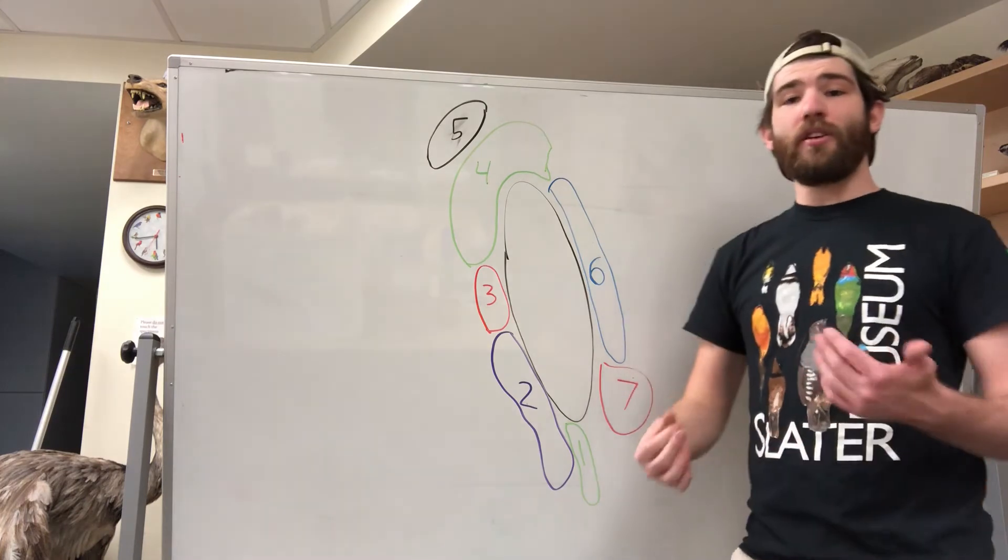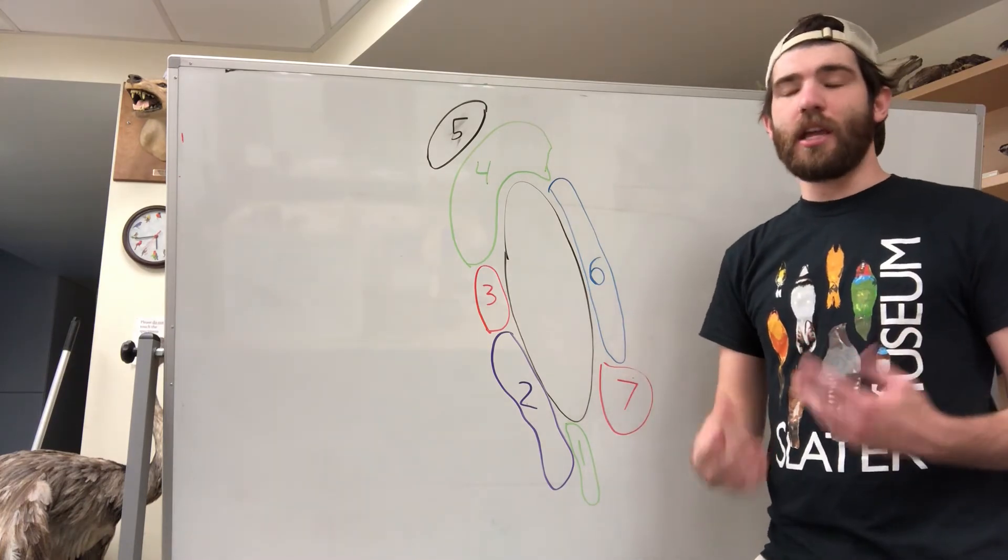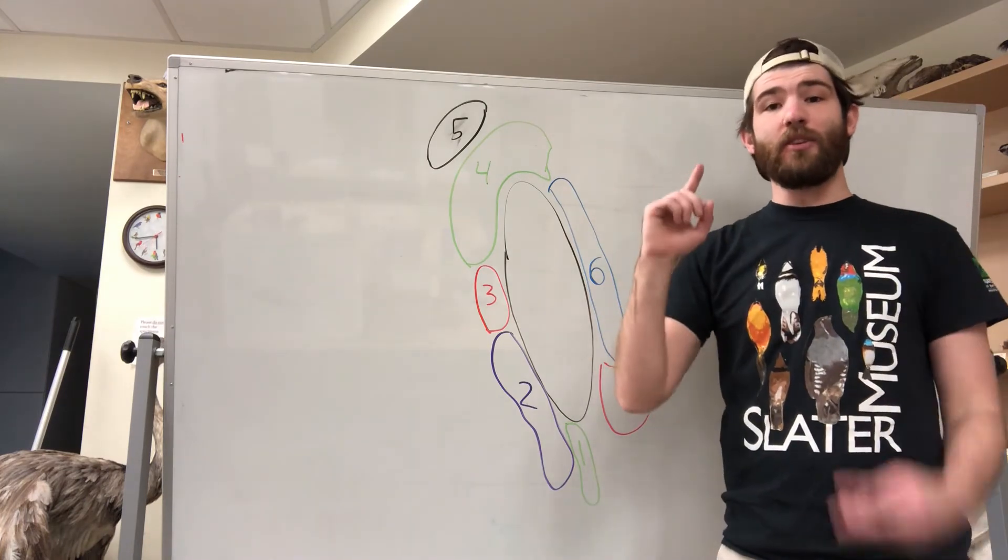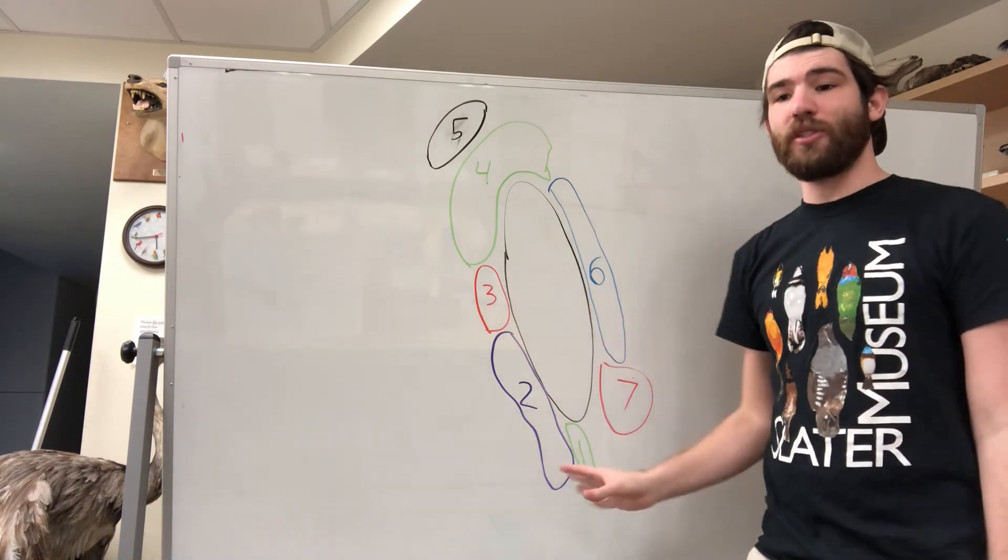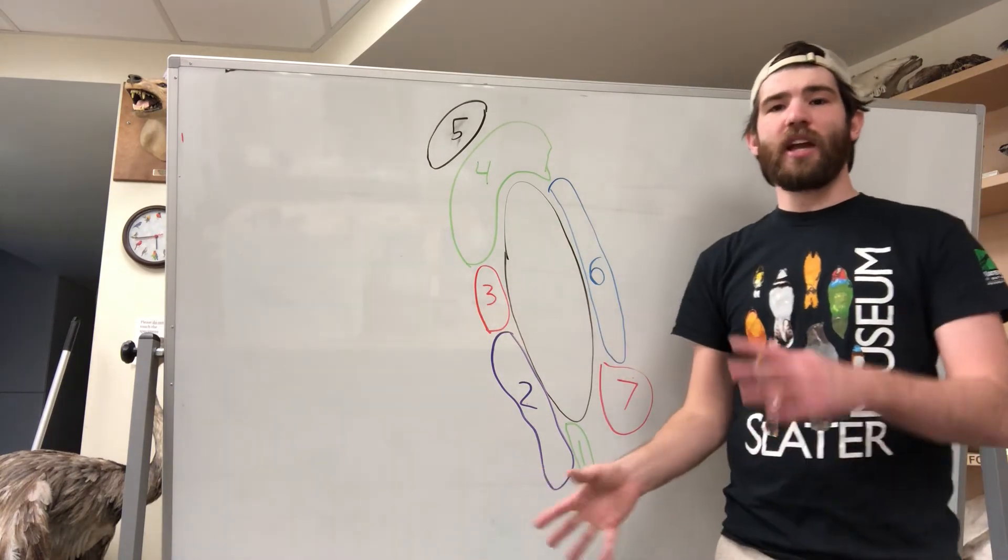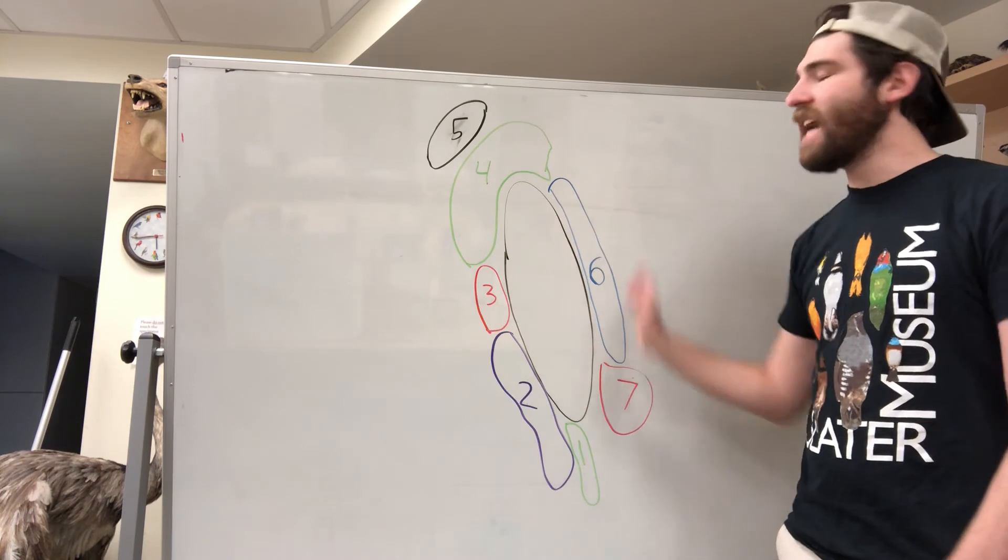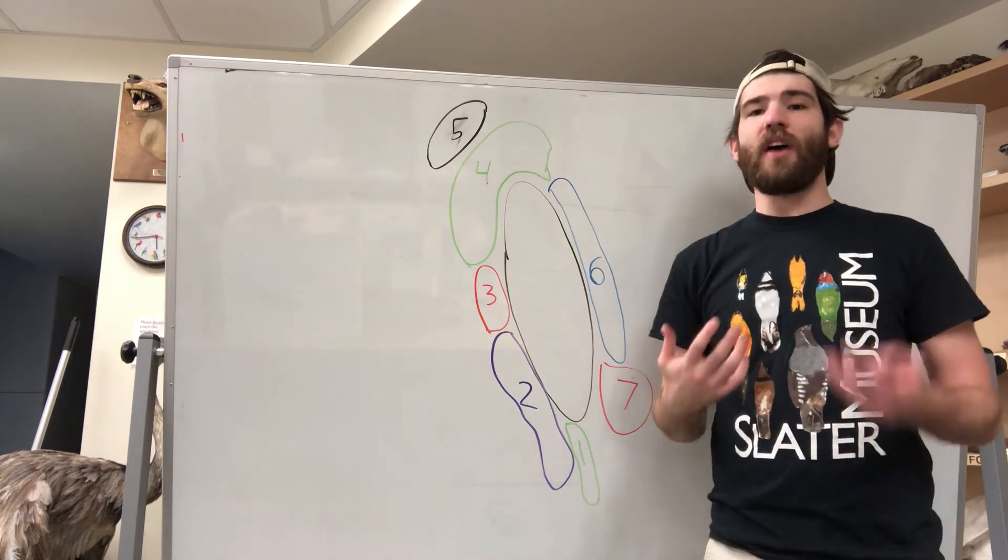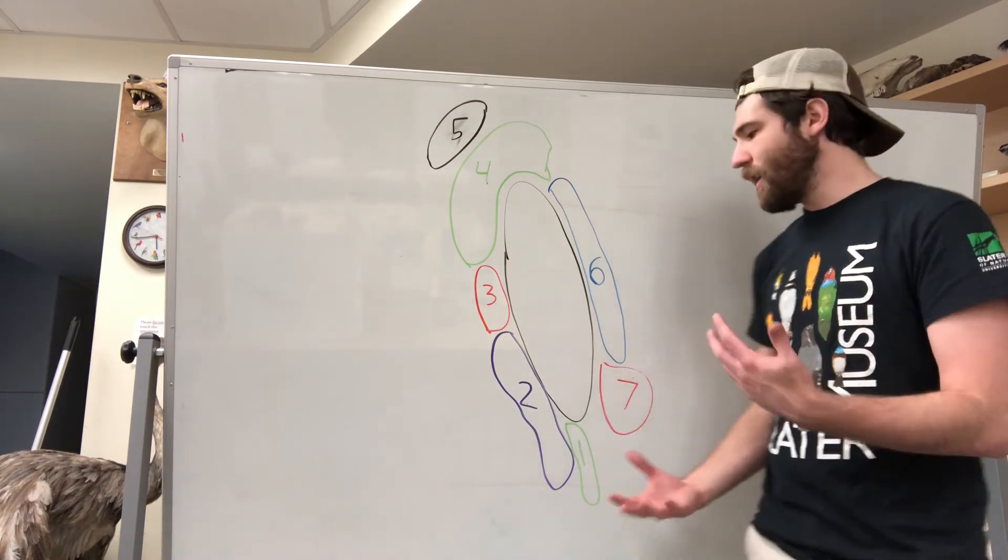There are a few other examples of ring species. There are different groups of seagulls around the Arctic that kind of show similar patterns, but scientists are still kind of debating the validity of this idea of a ring species. And there are lots of other ideas in the air of what it might be.